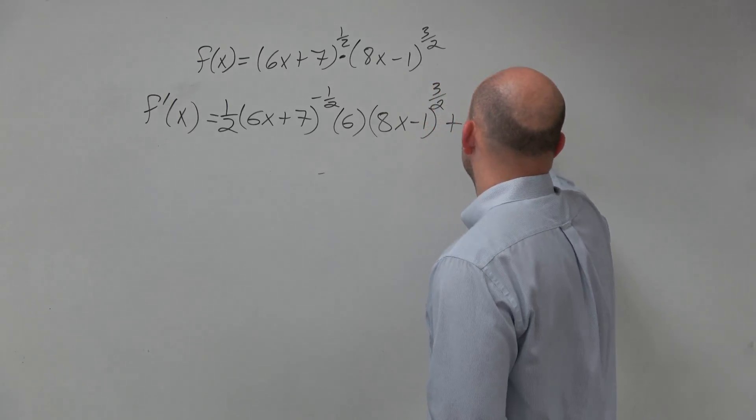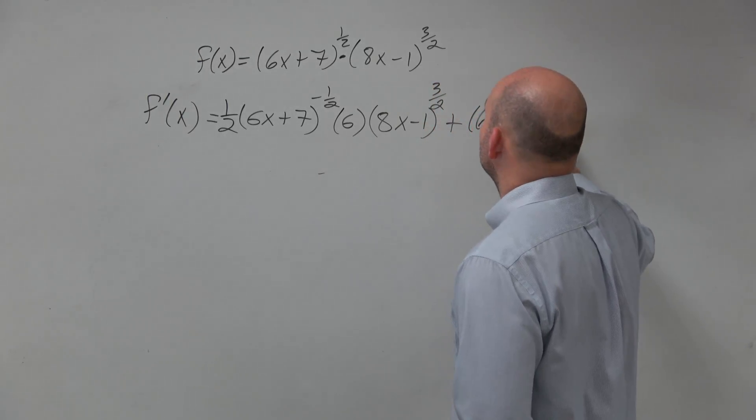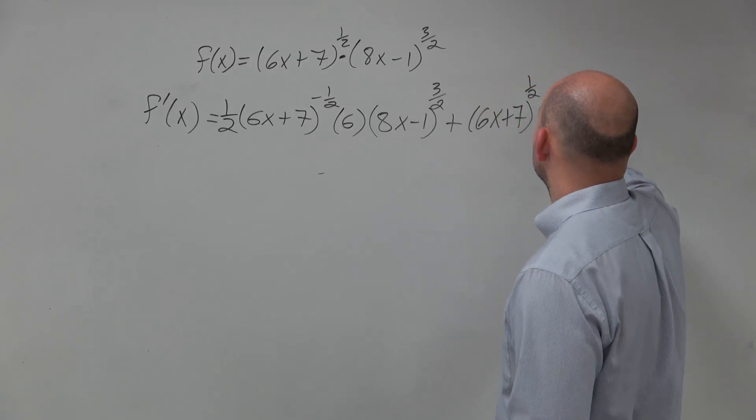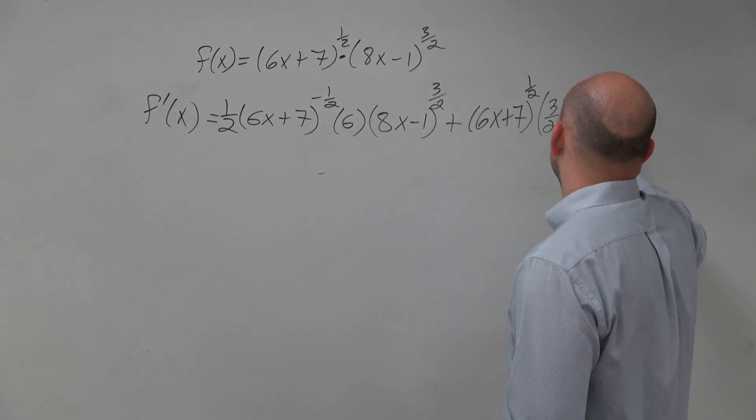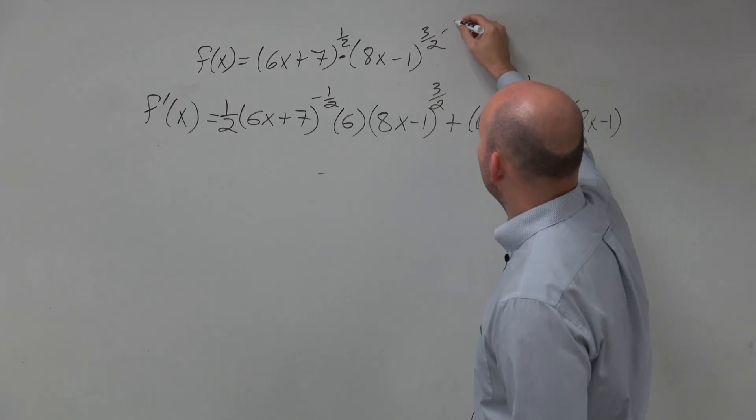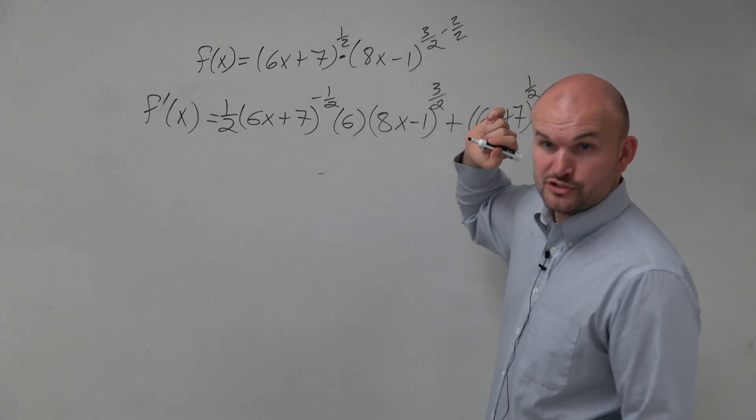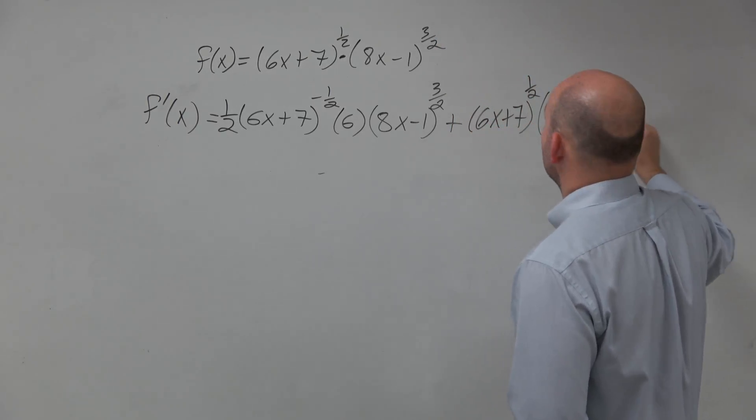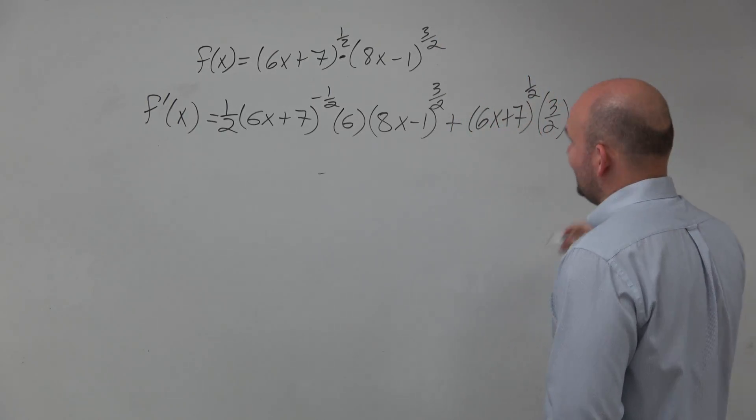Plus the first function, 6x plus 7 to the 1/2, times the derivative of the second problem, which brings down the 3/2, times 8x minus 1. Minus 1 is really the same thing as 2 over 2, right? So that's really positive 1/2, times the derivative of the inside, which is 8.